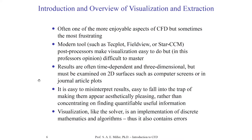Visualization, like the solver, is an implementation of discrete mathematics and algorithms, and therefore it contains the same numerical errors as in CFD. For example, if you're finding derived quantities like vorticity, you're finding a discretized form of the equation for vorticity and applying it to your CFD data. This could introduce new errors not in the solution but only present in the visualization process. Another example: if your CFD solver is fifth-order accurate and your visualization software is only using second or first order derivatives, you're losing accuracy. Furthermore, there's a loss of accuracy when it's moved to the screen, since the screen has a finite number of pixels.